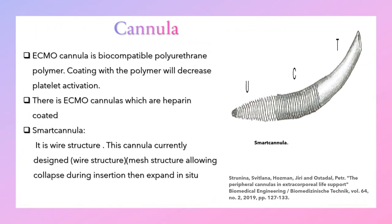ECMO cannulas are made of biocompatible polyurethane polymer. Coating with this polymer decreases blood clot activation. They are also heparin-coated. A newer type is called the smart cannula — it has a wired structure where part of the cannula is uncovered, forming a mesh of wire that allows collapse during insertion. After insertion, it expands in situ to allow better fixation.